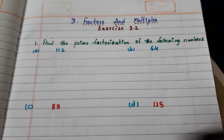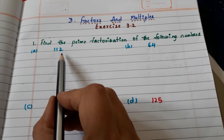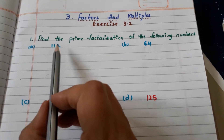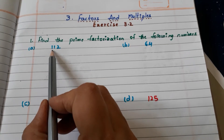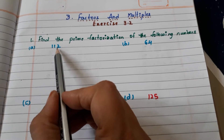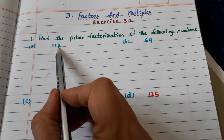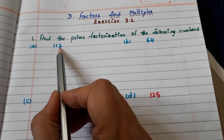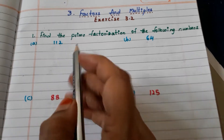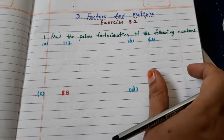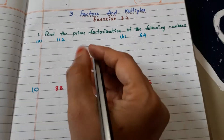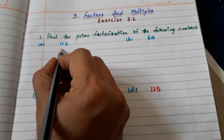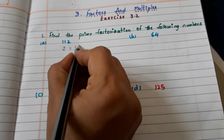Here we have the first number, 112. First, we have to check whether it goes with 2 or not. So in the units place, 2 is there, so it goes with 2. How many times? 56 times. We can write 112 as 2 into 56.